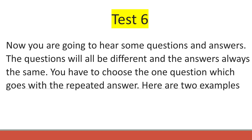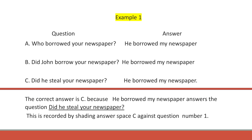Test 6. You are now going to hear some questions and answers. The questions will all be different and the answers always the same. You have to choose the one question which goes with the repeated answer. Here are two examples. Example 1. Who borrowed your newspaper? He borrowed my newspaper. Did John borrow your newspaper? He borrowed my newspaper. Did he steal your newspaper? He borrowed my newspaper. The correct answer is C because He borrowed my newspaper answers the question Did he steal your newspaper? This is recorded by shading answer space C against number 1.